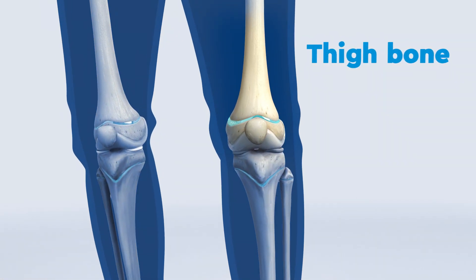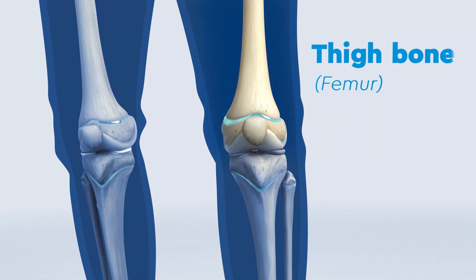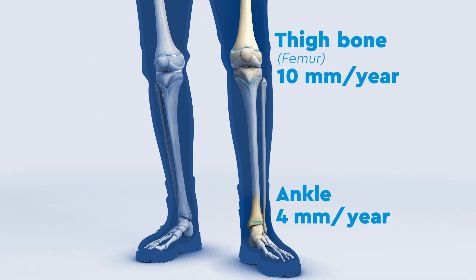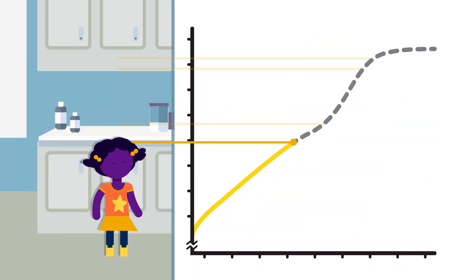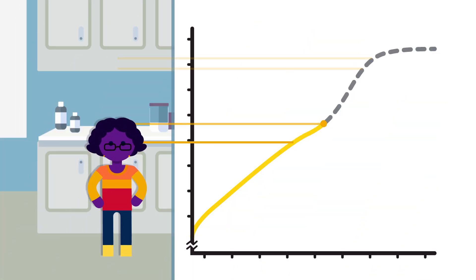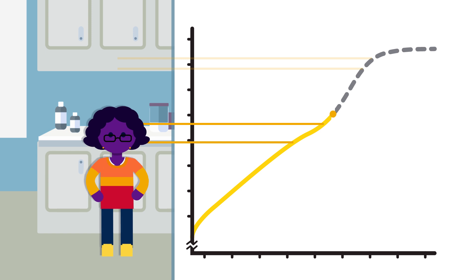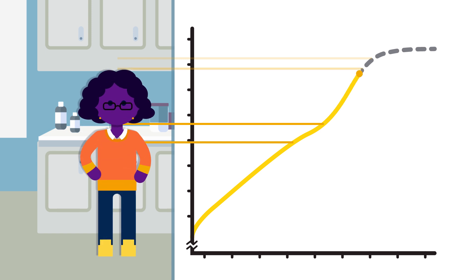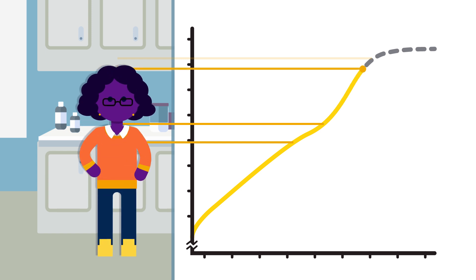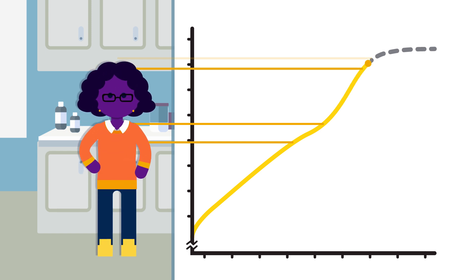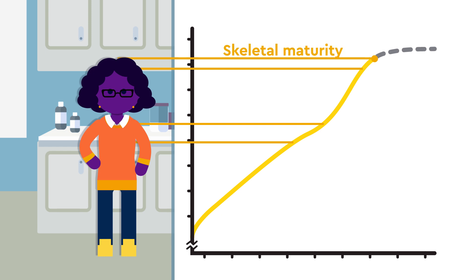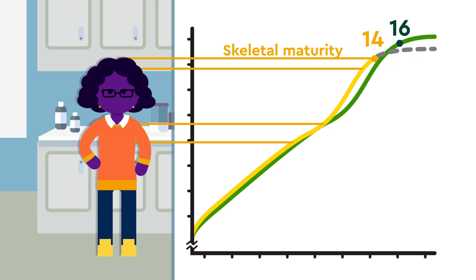The end of the thigh bone, or femur, can lengthen as much as 10 millimeters per year in children, while the ankle only grows around 4 millimeters per year. Your growth rate speeds up during growth spurts, with one of the biggest happening during your preteen or early teenage years. Your growth will slow down as you reach skeletal maturity, which is approximately 14 for girls and 16 for boys.